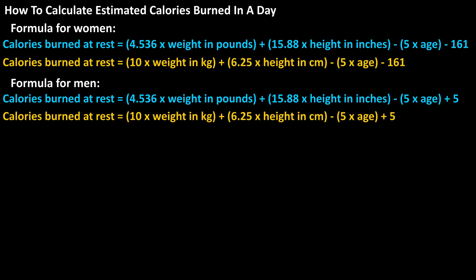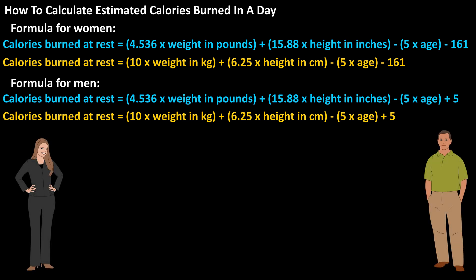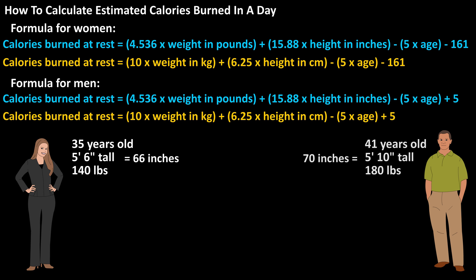And here are the formulas using metric units. As an example, let's say that we're doing the calculations for a woman and a man. The woman is 35 years old, 5 foot 6 inches tall, and weighs 140 pounds. And the man is 41 years old, 5 foot 10 inches tall, and weighs 180 pounds.